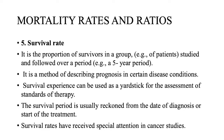The fifth measure is the survival rate. It is the proportion of survivors in a group — for example, patients studied and followed over a period such as five years. It is a method of describing prognosis in certain disease conditions, and survival experience can be used as a yardstick for assessing standards of therapy. The survival period is usually counted from the date of diagnosis or start of treatment. Survival rates have received special attention in cancer studies — for example, when a patient is diagnosed with cancer and asks about their chances of survival.